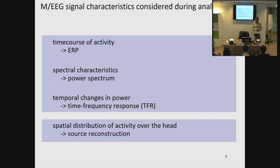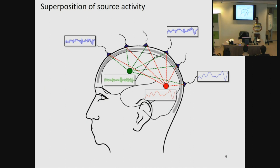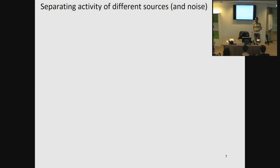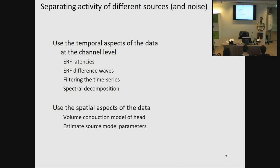But no matter which analysis that you apply to your data, you always have to think about the superposition of your source activity. Every signal records a superposition of all the underlying source activity. Luckily, we can use our temporal and our spatial aspects of the data in order to try to tear apart these sources. And in this lecture, I will focus on spectral decomposition.